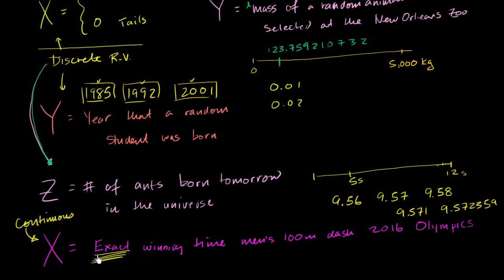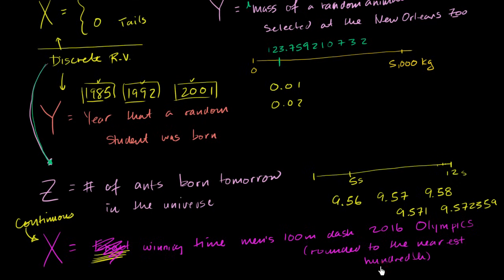Now, what if instead I defined X to be the winning time of the men's 100-meter dash at the 2016 Olympics, rounded to the nearest hundredth? Is this discrete or continuous? Now we can actually count the values this random variable can take on — it might be 9.56, 9.57, or 9.58. We can list them. So when we round to the nearest hundredth, we are now dealing with a discrete random variable.